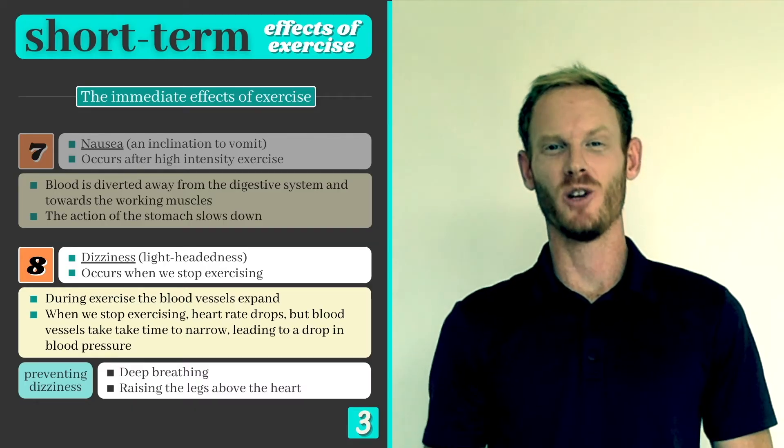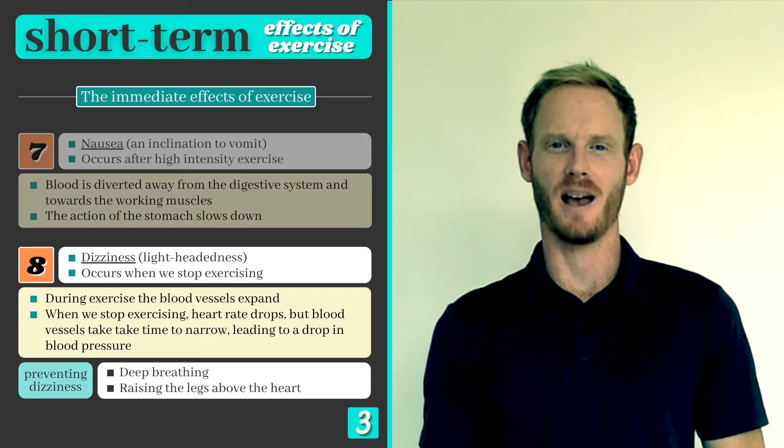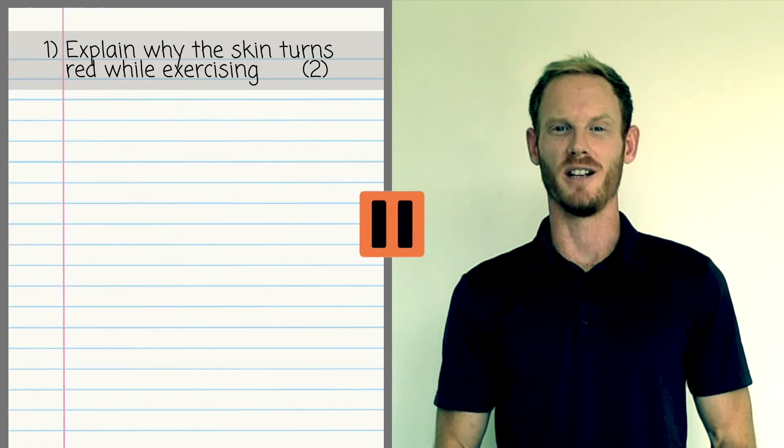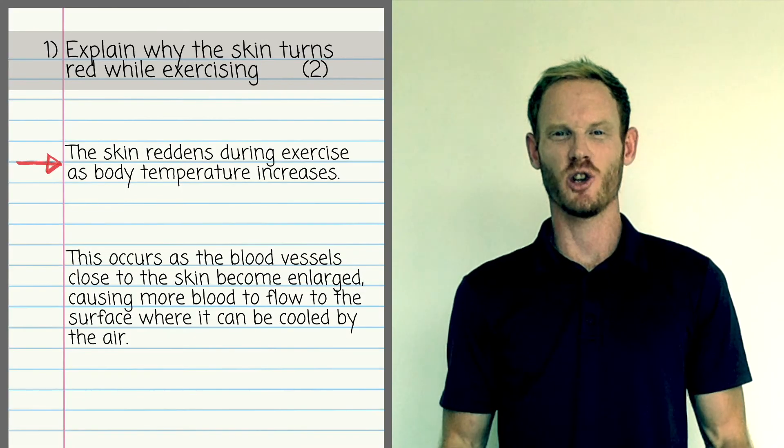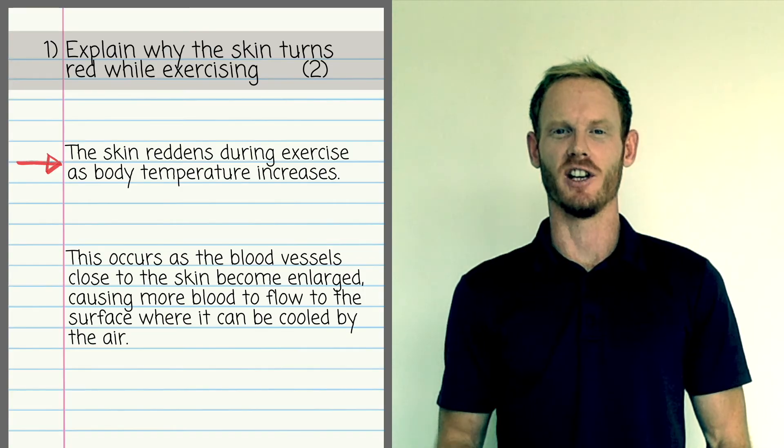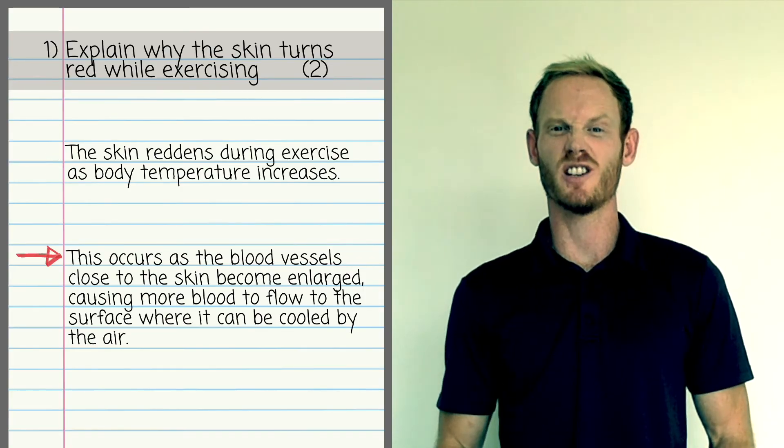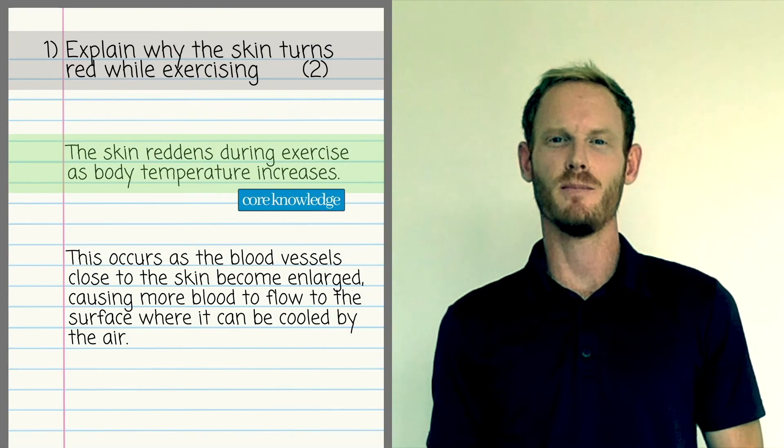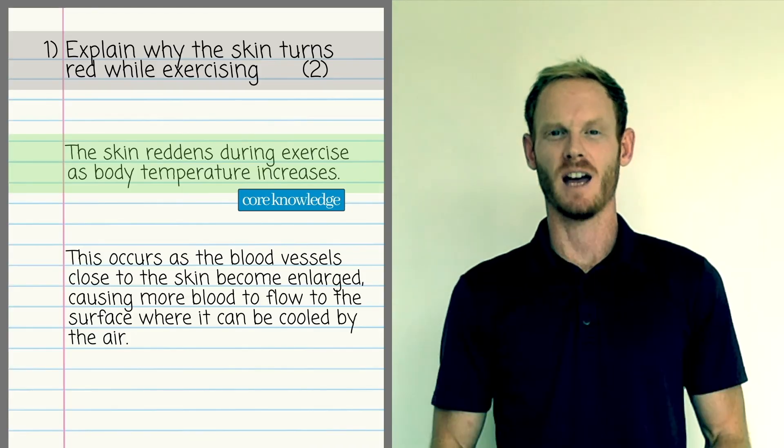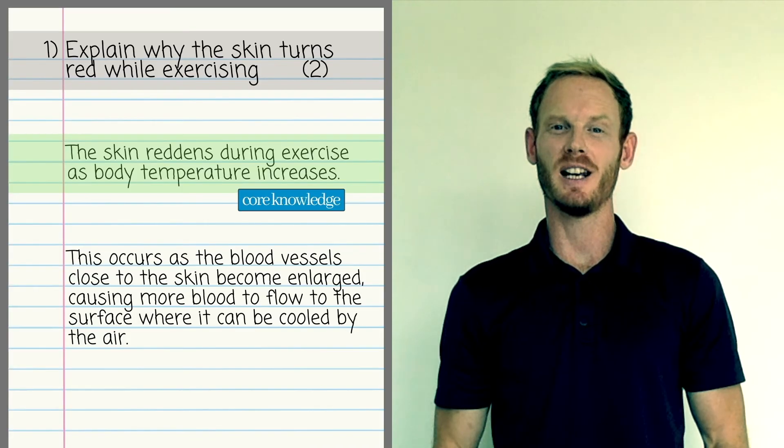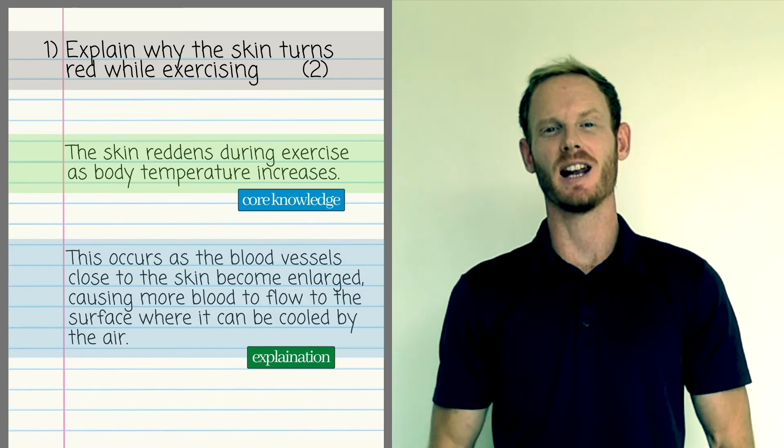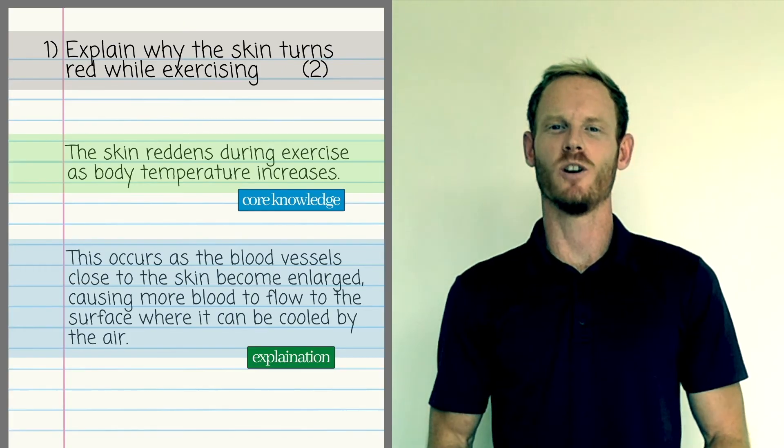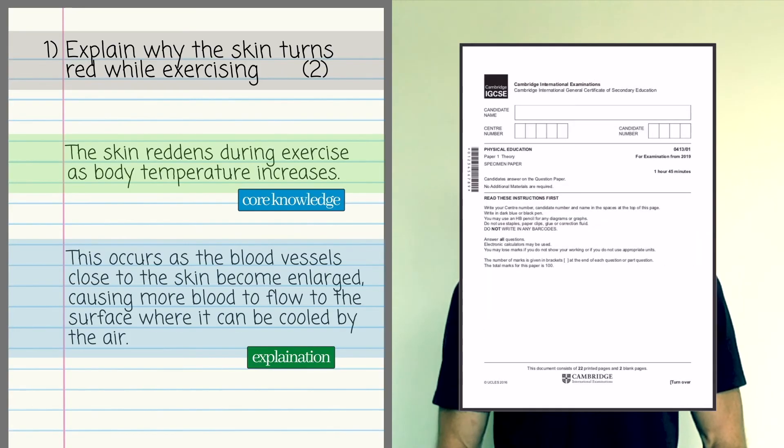Now that we've covered everything you need to know, the only thing that remains is to apply your knowledge to exam questions. Why not pause the video to attempt this one, and be sure to make two distinct points, one for each available mark. The skin reddens during exercise as body temperature increases. This occurs as the blood vessels close to the skin become enlarged, causing more blood to flow to the surface where it can be cooled by the air. The first statement demonstrates your core knowledge, and you'll be awarded a mark for this. In order to show a deeper level of understanding however, you'll need to provide an explanation of the process that causes your skin to turn red. If you'd like to try more questions like this one, you can find a link to the Cambridge PASS paper database down in the description.